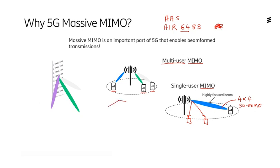When we are generating physical resource blocks as part of the transmission to a single UE, copies of those resources are created and then transmitted on different beams to different UEs. That also gives us an increase in capacity, because now we have more than one UE that's utilizing the same physical resources.